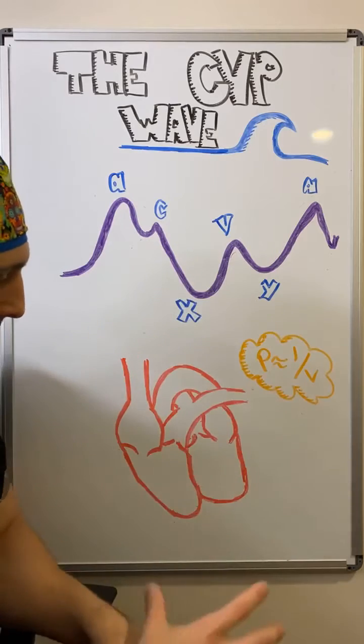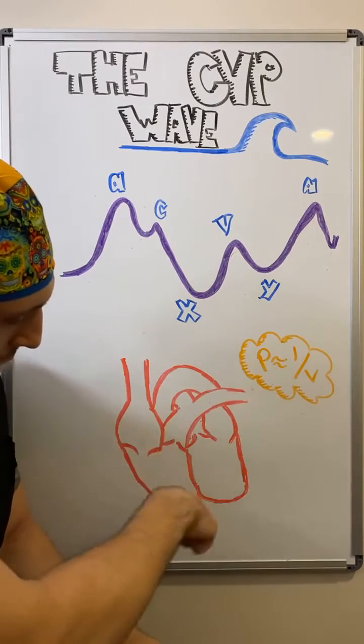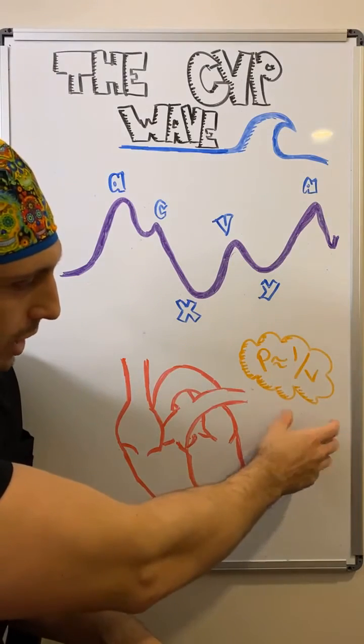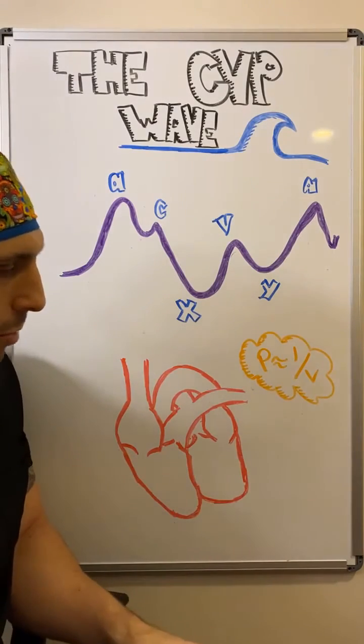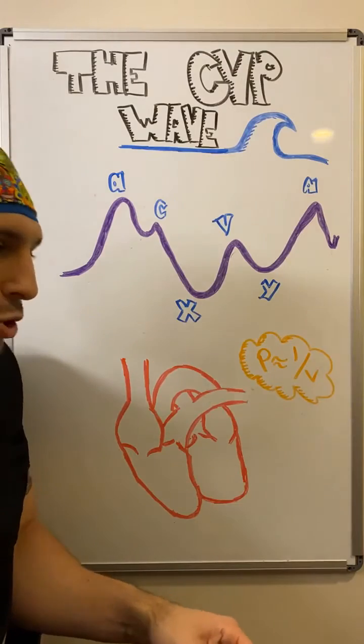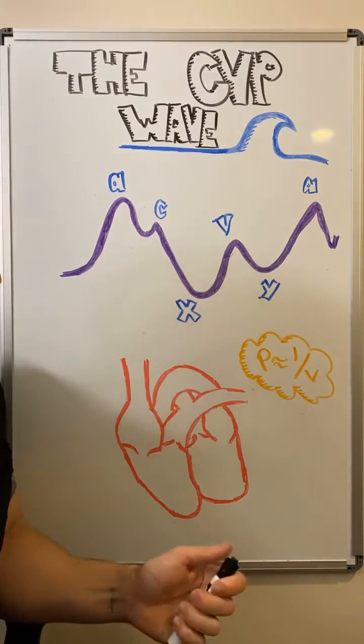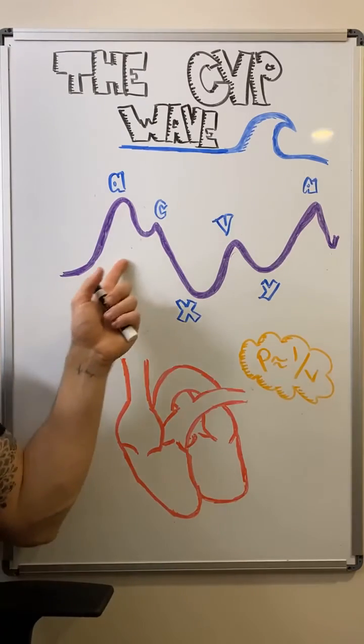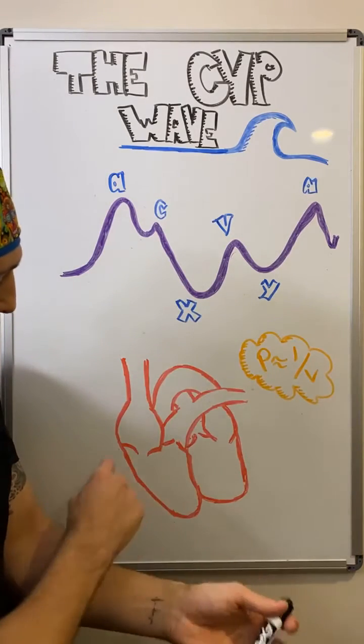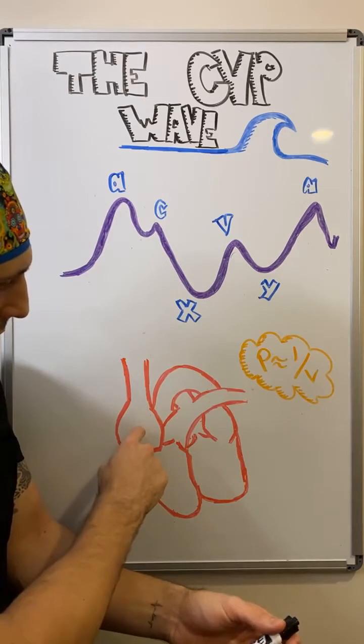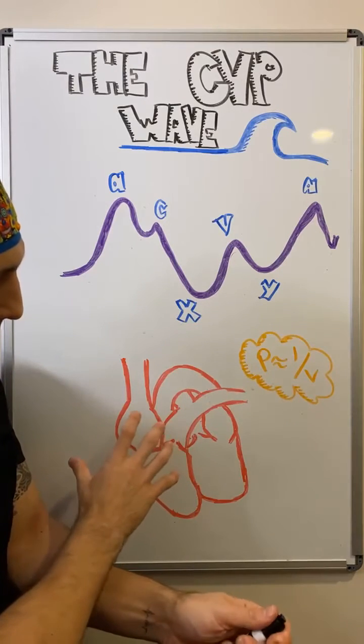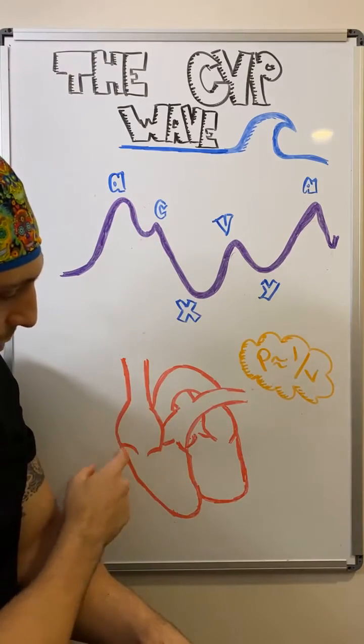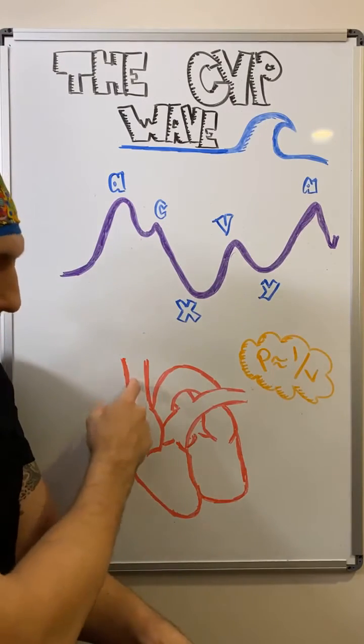You can see I've drawn our sample heart down here. We're really going to be focusing on the right side. And then the equation that I always come back to, remembering that pressure is proportional to one over volume, is the most important thing. And really what the tracing is showing us is the changes, more or less, of volume-ish of the right side of the heart, mainly the right atrium and the SVC.